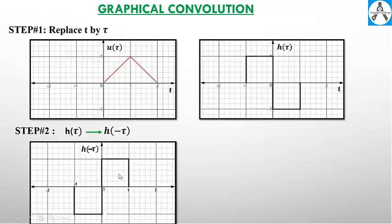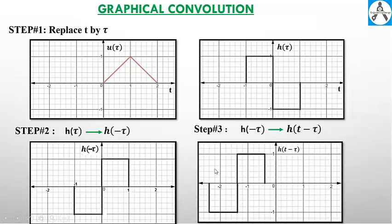Use a dummy variable tau and replace t by tau. Step number two is to flip h of tau about the y-axis. Step number three: replace minus tau by t minus tau.